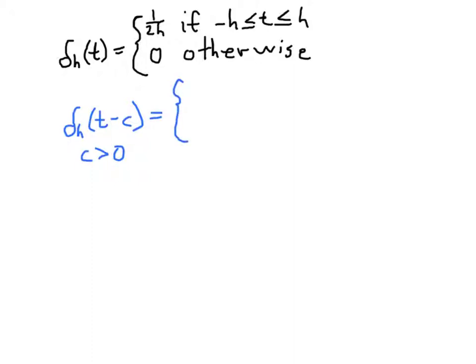So what we have is the function value is still 1 over 2h. But now, rather than having that value between negative h and h, in other words within h of t, it needs to have that value within h of the number c.